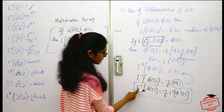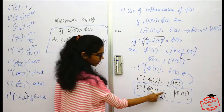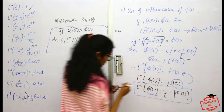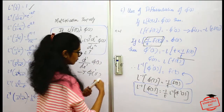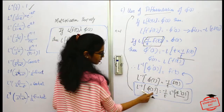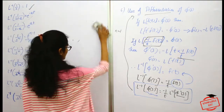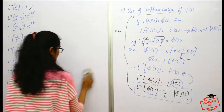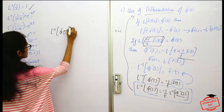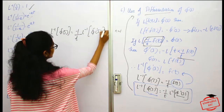What this property states is: if you want to find the inverse Laplace transform of a certain function, it is given as minus 1 over t times the inverse Laplace transform of the first derivative of that function. So: L⁻¹{φ(s)} = (−1/t) · L⁻¹{φ'(s)}. This is the sixth method — use of differentiation of φ(s).